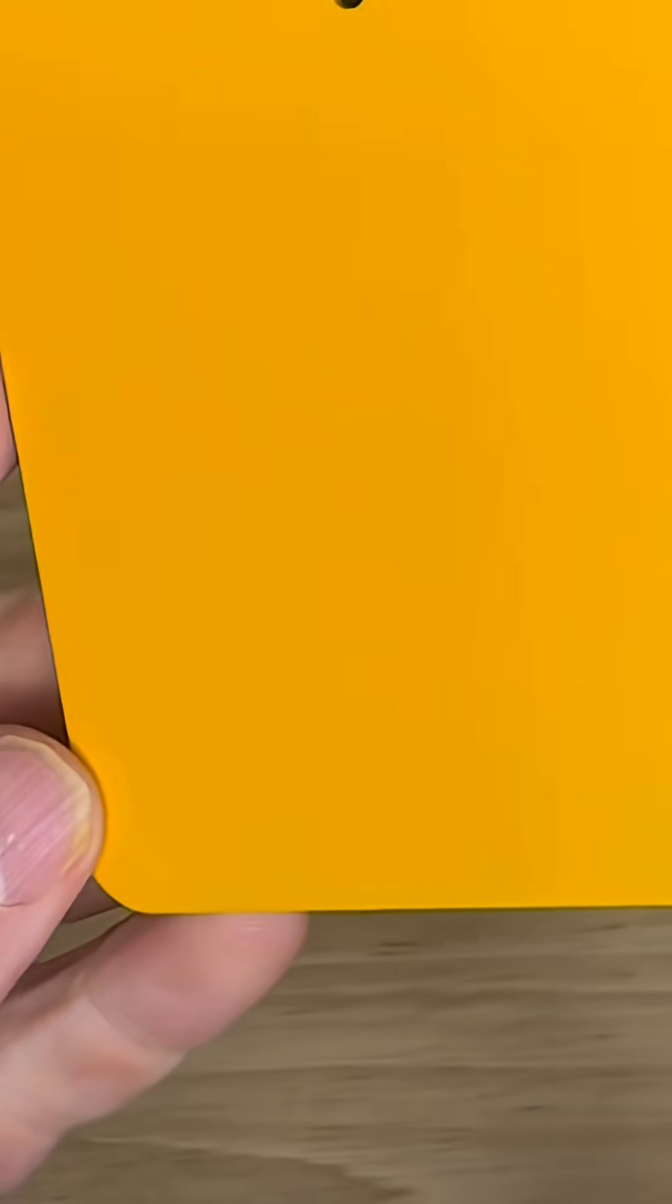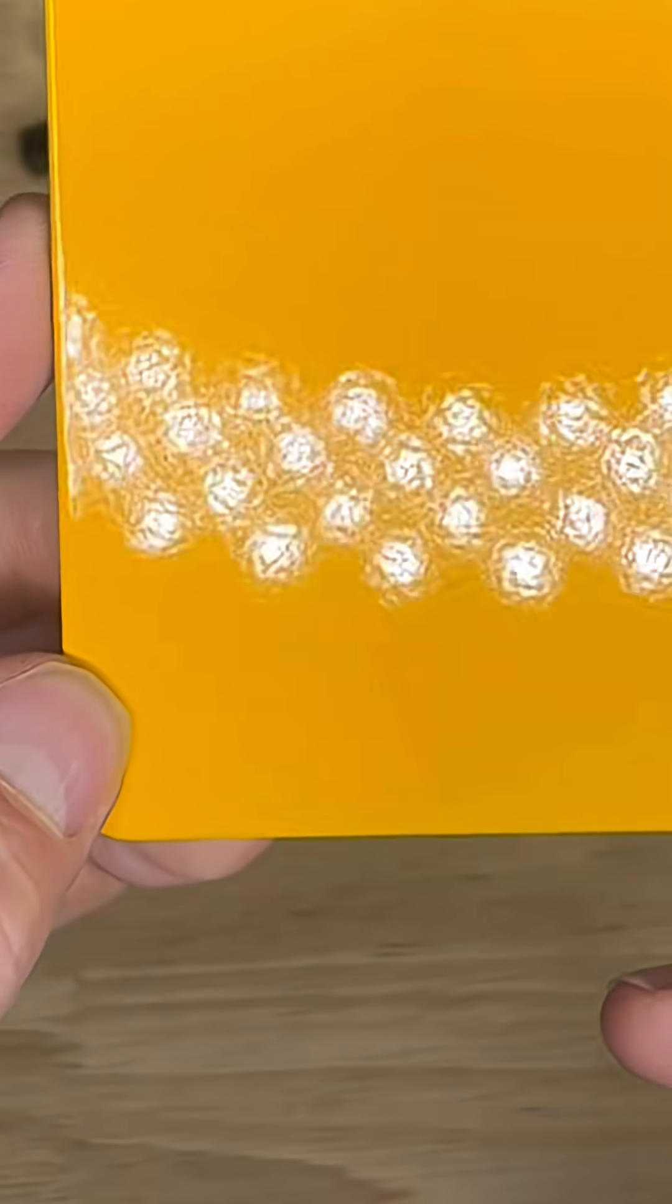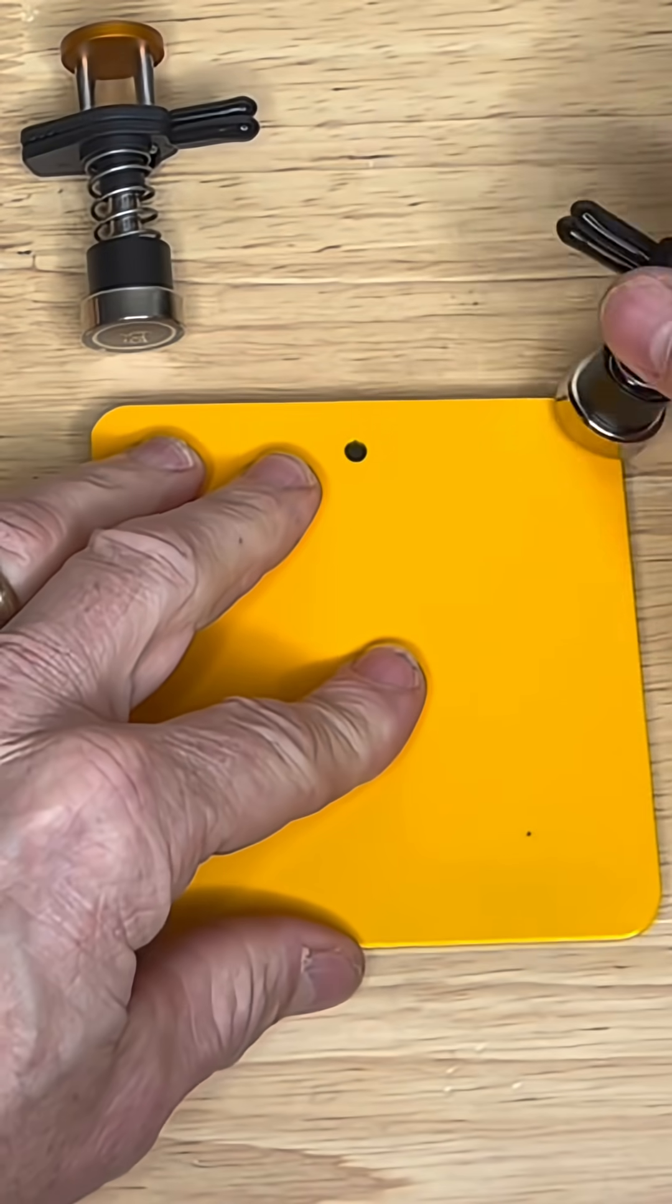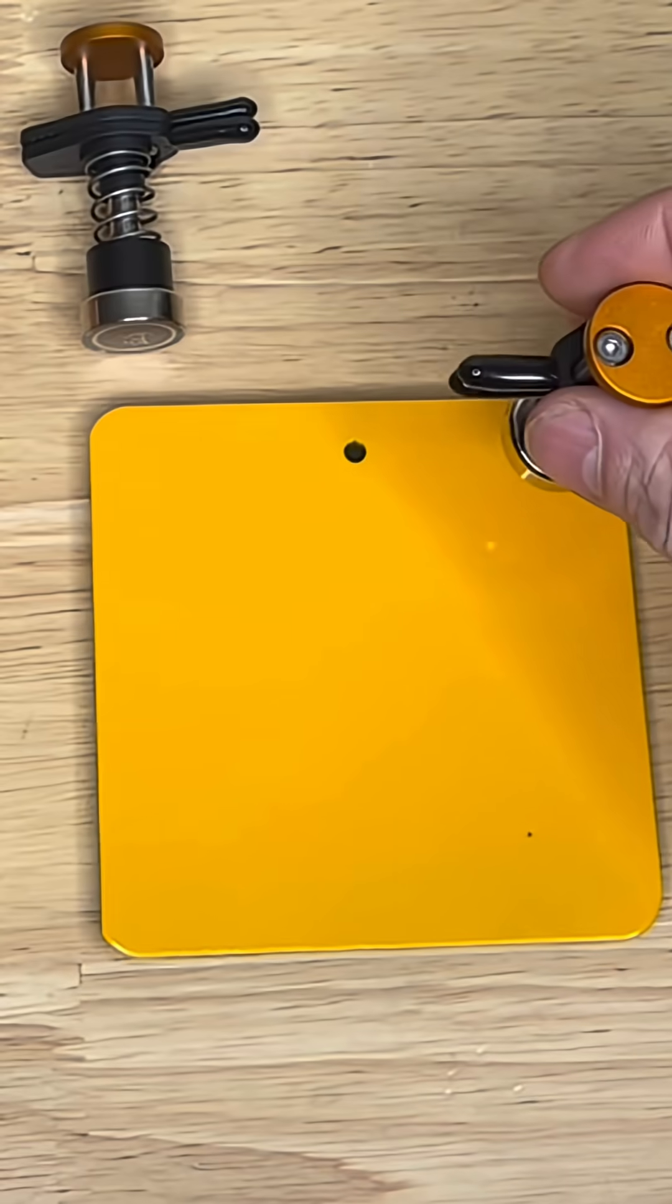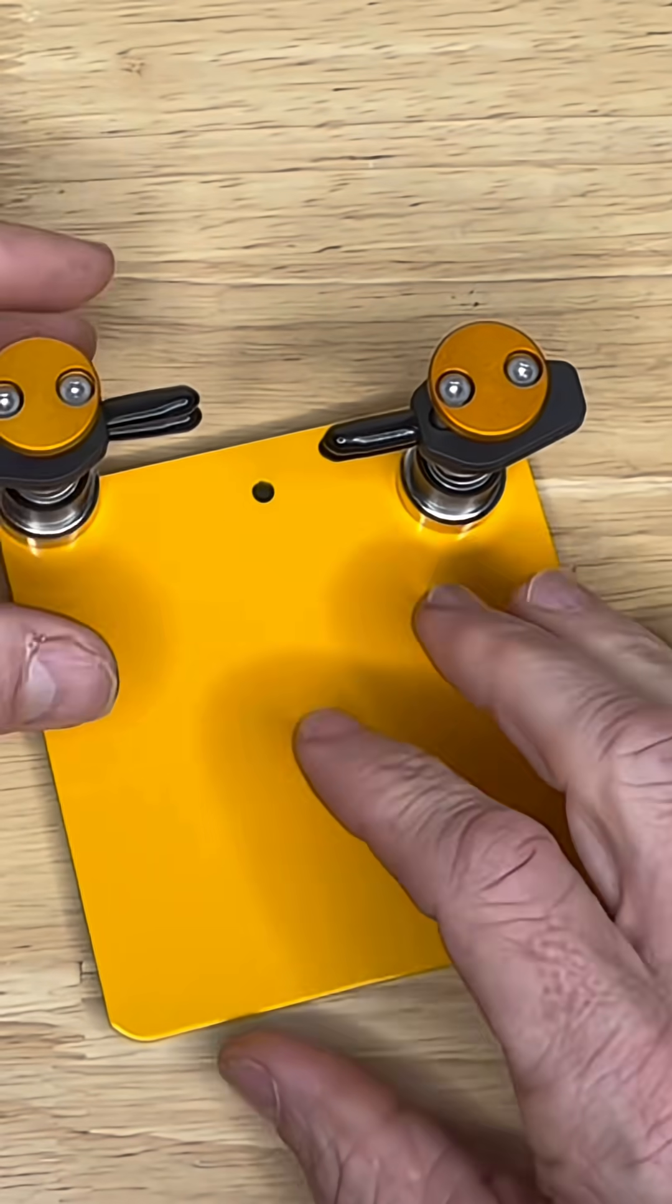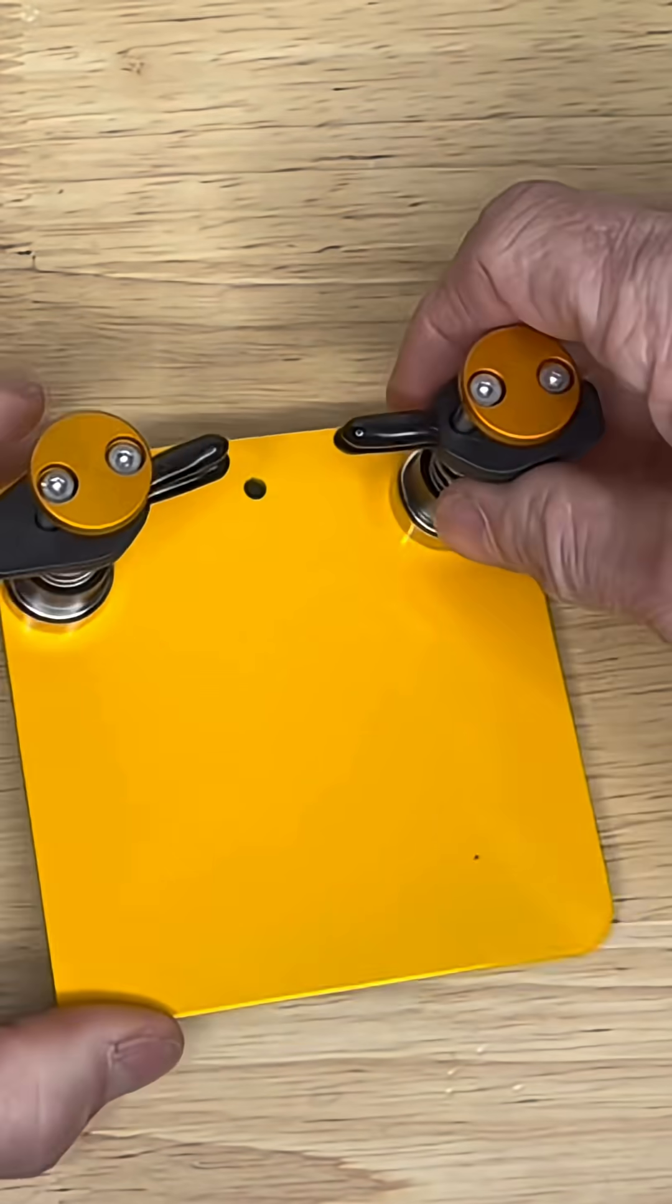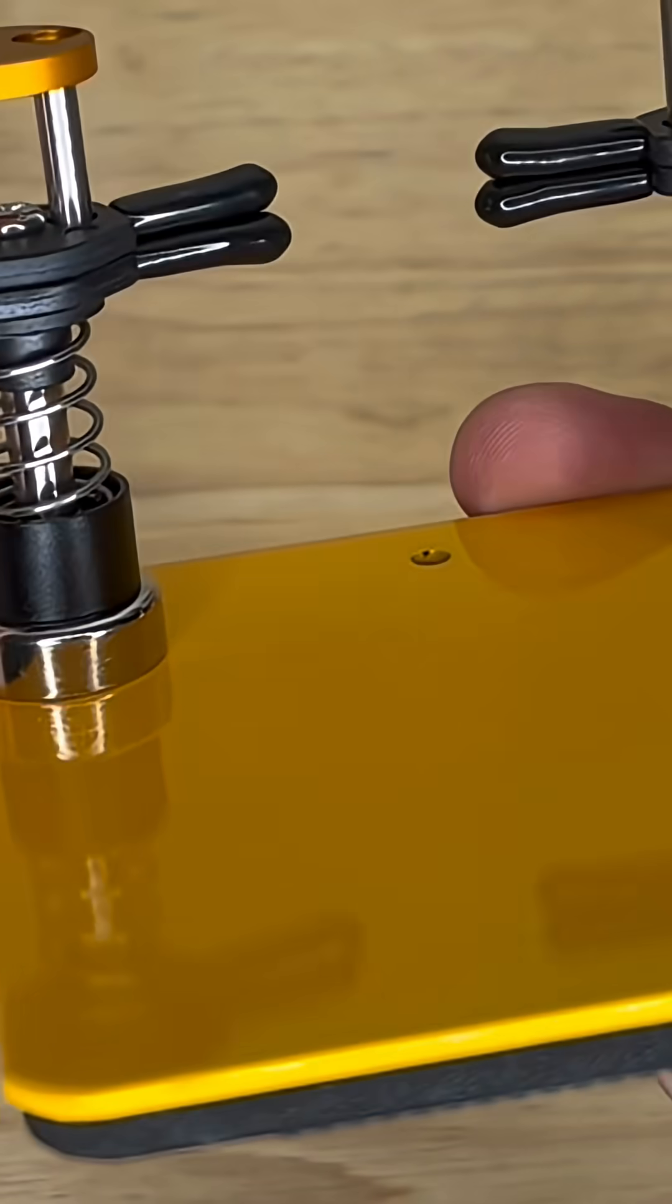The dimensions on this are about almost 4 by 4, 3.94 by 3.94. And check this out, you can see that. These have some good magnets on there, got that magnetic base. These things stick on there.